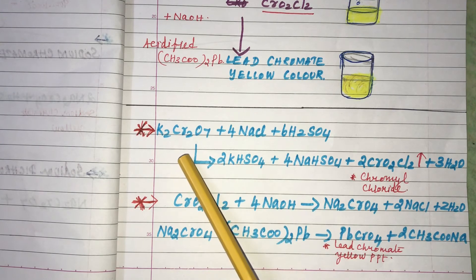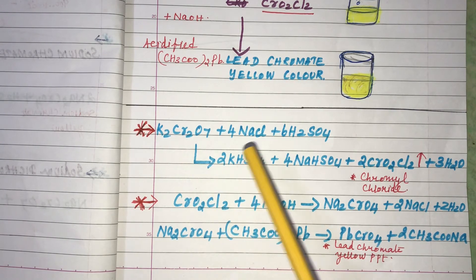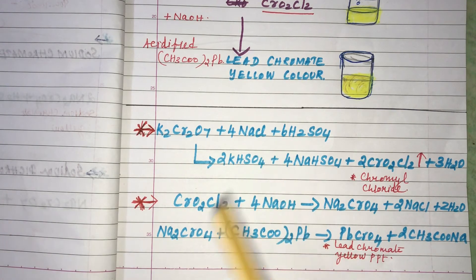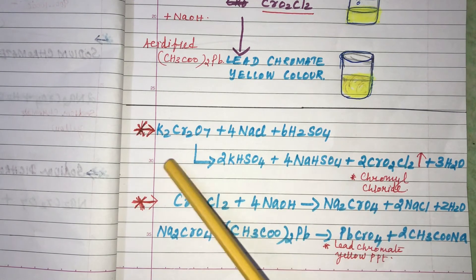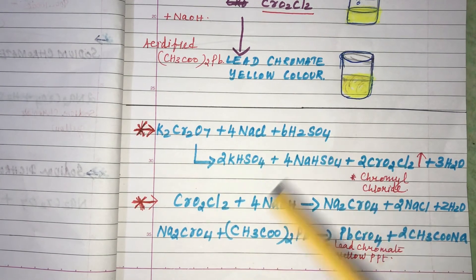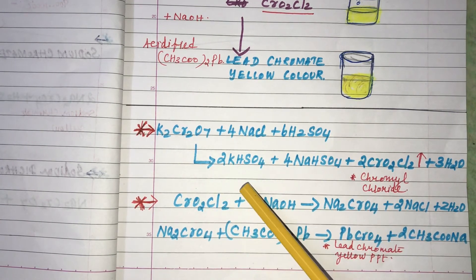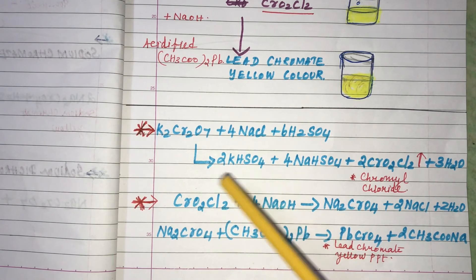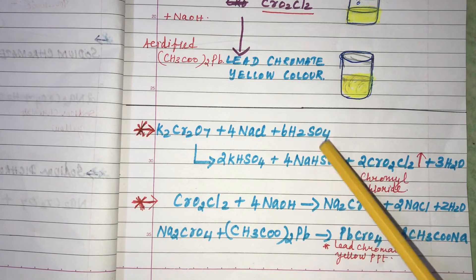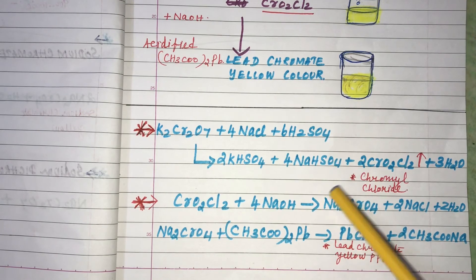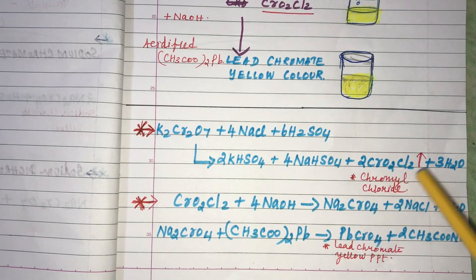The balanced equation is: 1 molecule of Potassium Dichromate, 4 molecules of Sodium Chloride, and 6 molecules of H₂SO₄ — giving 2KHSO₄, 4NaHSO₄, 2CrO₂Cl₂ (Chromyl Chloride), and H₂O.